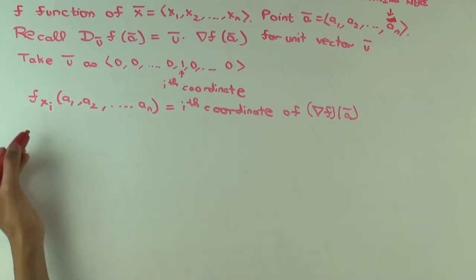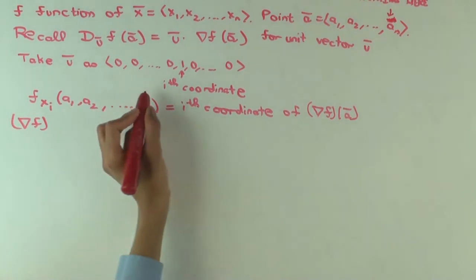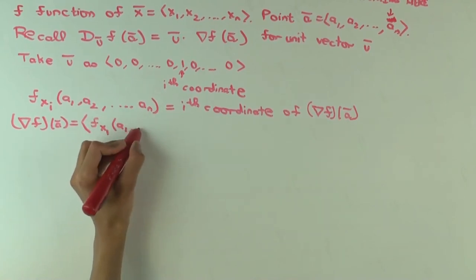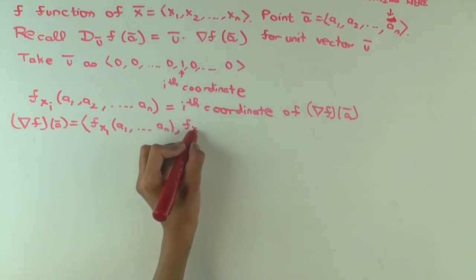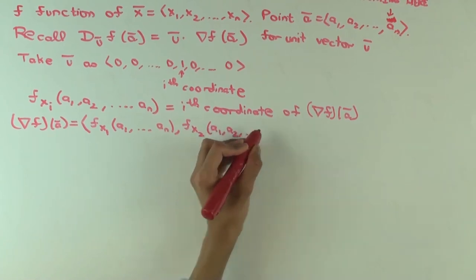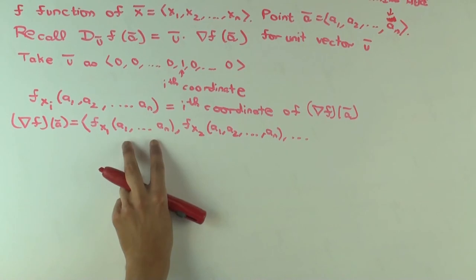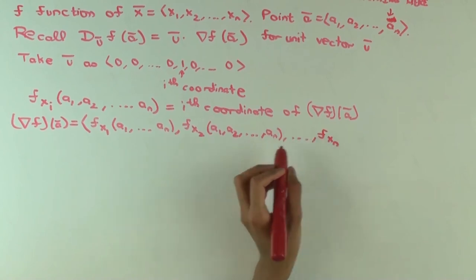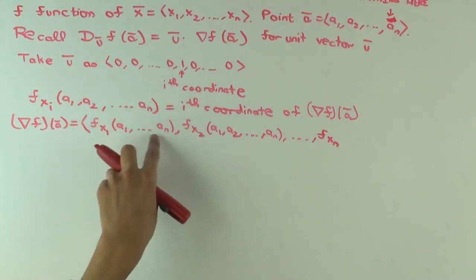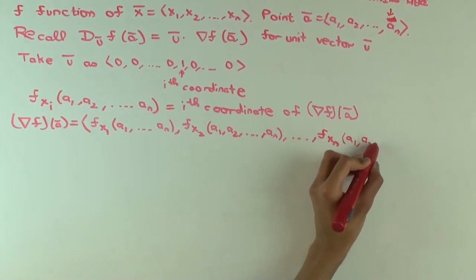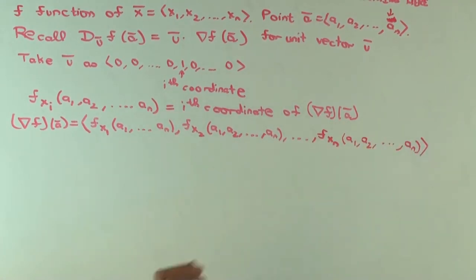So now we are in a good position to say what exactly the gradient vector should be. Since we can do this for every i, the gradient vector is going to be (f sub x1, f sub x2, ..., f sub xn) — all evaluated at the point. These are scalar numbers because we are doing everything at a particular point. It's a vector with n coordinates, and those coordinates are the partial derivatives.